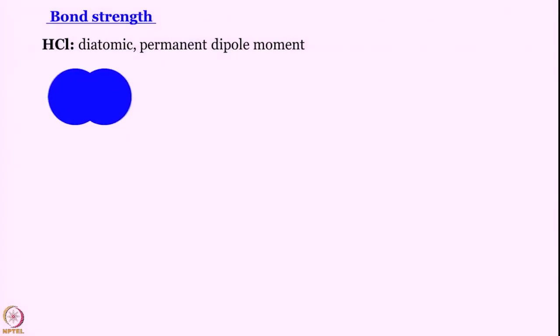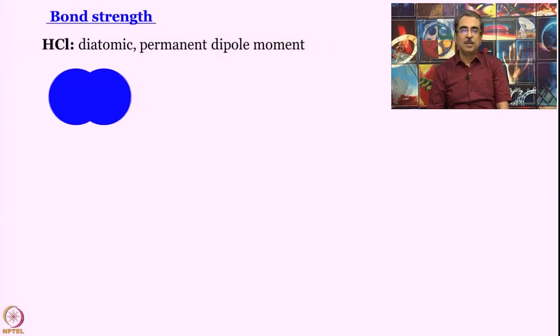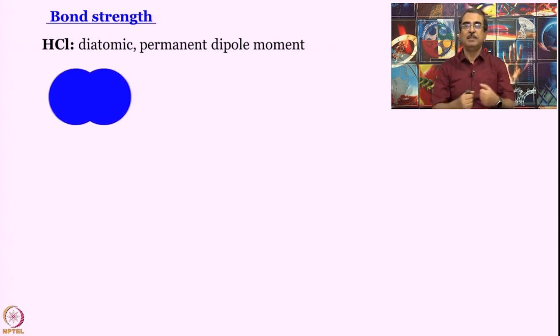Again let us work with the same molecule, say HCl. HCl is a diatomic molecule with a permanent dipole moment. So what happens when it vibrates? When it vibrates essentially the dipole moment keeps changing.